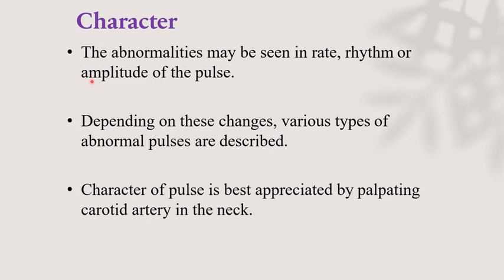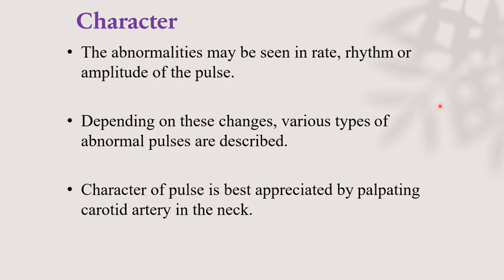Character: abnormalities may be seen in the rate, rhythm, or amplitude of the pulse. Depending on these changes, various types of abnormal pulses are described. Character of the pulse is best appreciated by palpating the carotid artery in the neck. Depending on changes in rate, rhythm, and volume or amplitude, the character of the pulse will be defined.